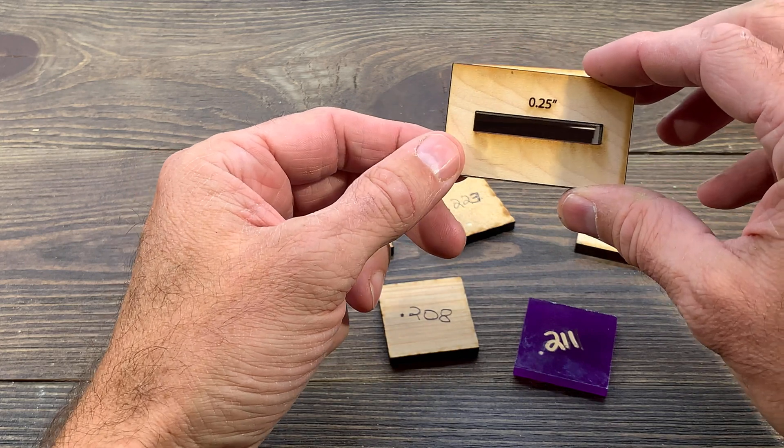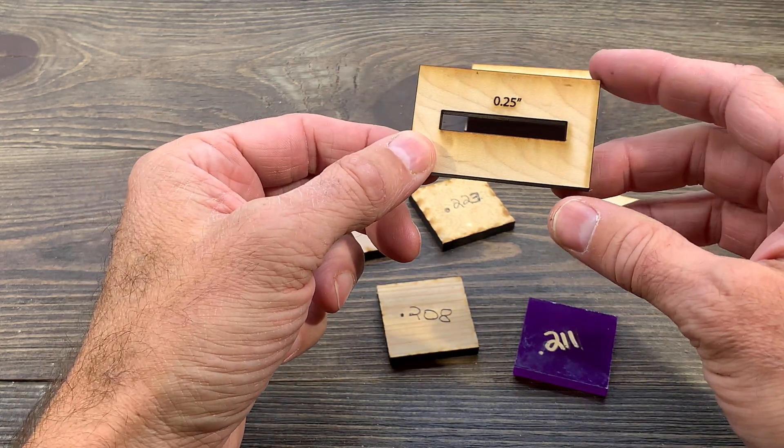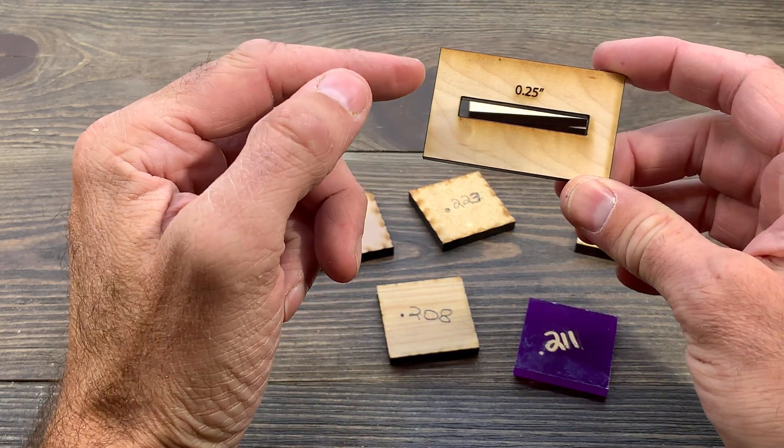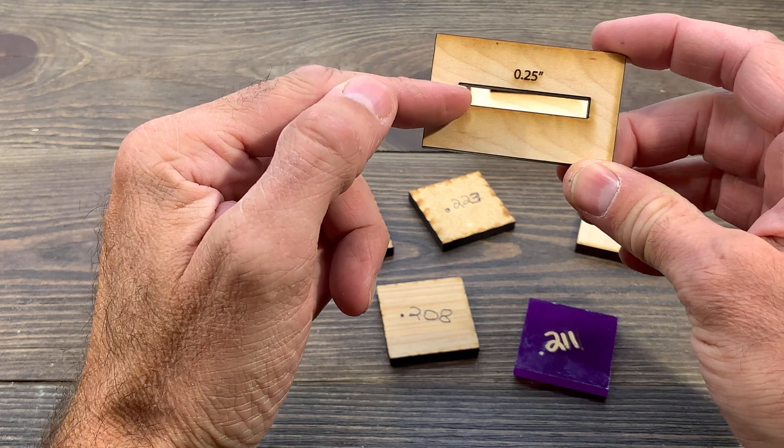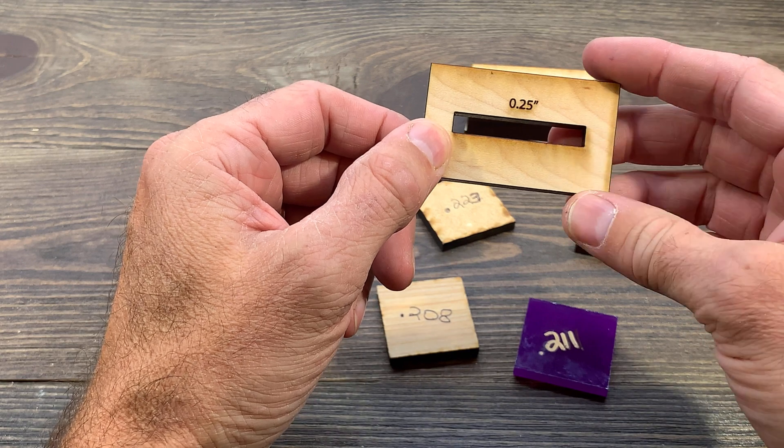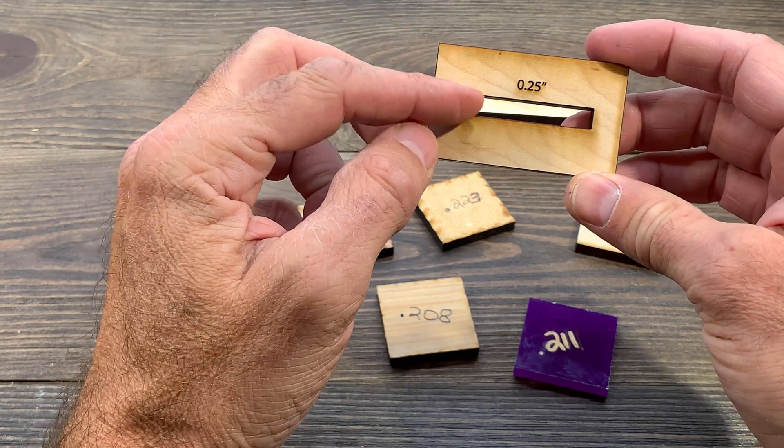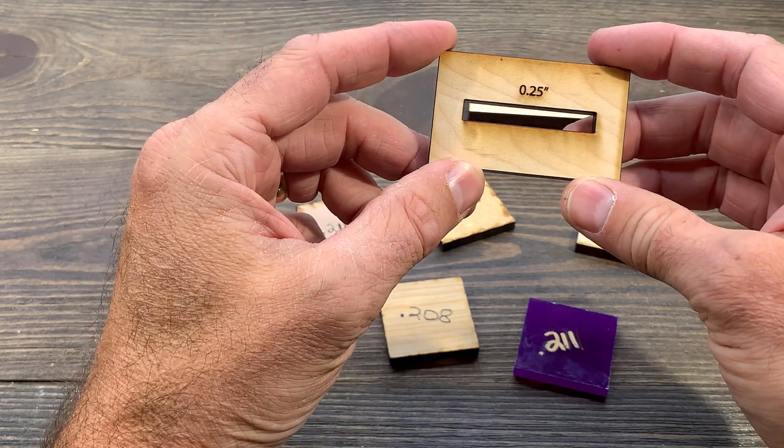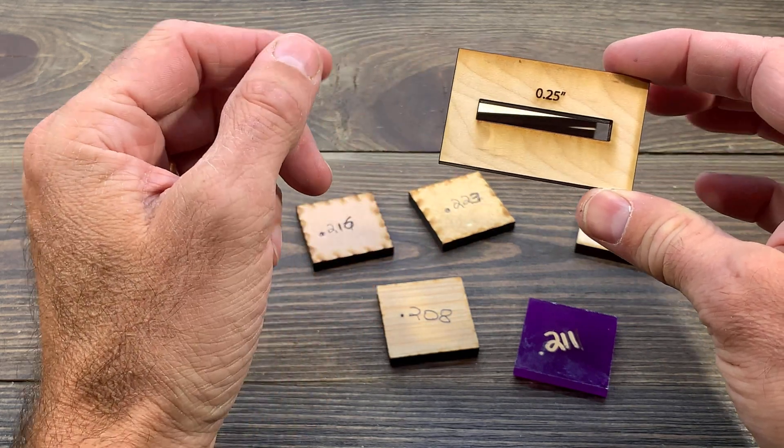And to make matters worse, or to explain the problem even more, if you know anything about kerf, when I cut this 0.25-inch slot, it's actually approximately 0.01 thicker than that or bigger. So it's actually around 0.26, the actual slot is.